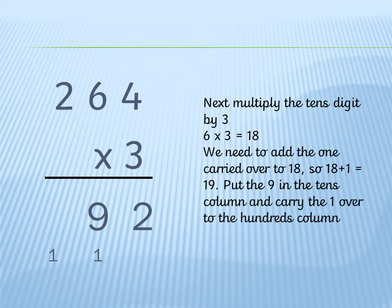Next we multiply the tens number by 3. So 6 times 3 equals 18. We add the 1 which has been carried over to make 19. We put the 9 in the tens column and carry the 1 over into the hundreds column.